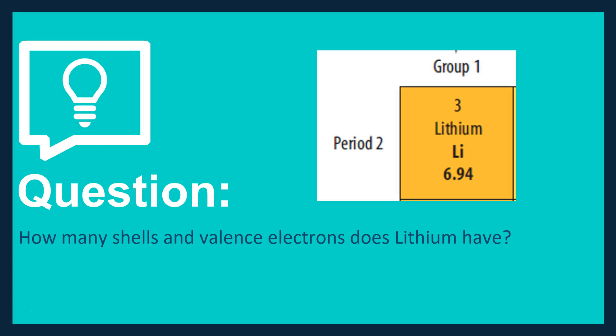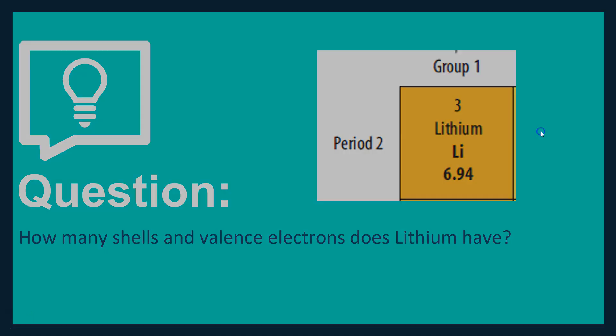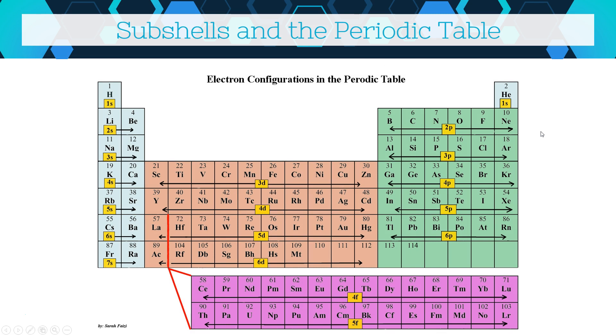Look at lithium — it's in group 1 and period 2. Pause the video and work out how many shells lithium has and how many valence electrons it has. The period number tells us the number of shells, so period 2 means two shells. It's in group 1, so it has one valence electron — that's all you need to do to answer that question.